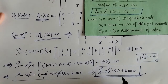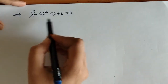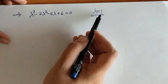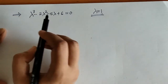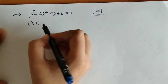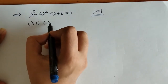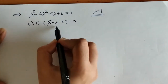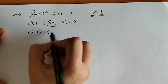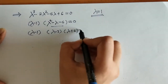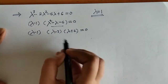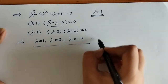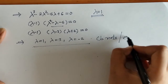Now we find the roots of this characteristic equation to get the characteristic roots, which are the eigenvalues. We can check that lambda equals 1 is one root; putting lambda equals 1 satisfies the equation. So lambda minus 1 is one factor of this cubic. Using synthetic division, we get the other factor lambda squared minus lambda minus 6, which factorizes as (lambda minus 3)(lambda plus 2). So the eigenvalues are lambda equals 1, lambda equals 3, and lambda equals minus 2.